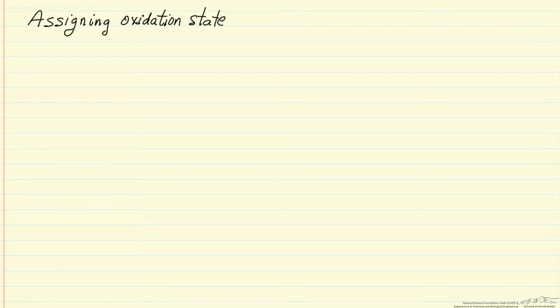I'm going to describe here how we determine or assign the oxidation states or the oxidation numbers for atoms in molecules. This is essentially a bookkeeping method that is useful when we're balancing redox equations. What we do is apply a set of rules, and we have to apply the rules in order. I'll show you the rules in order and give you an example of how to apply each of these rules.